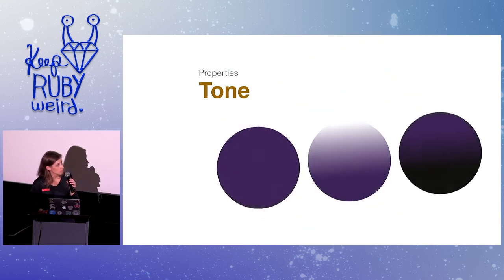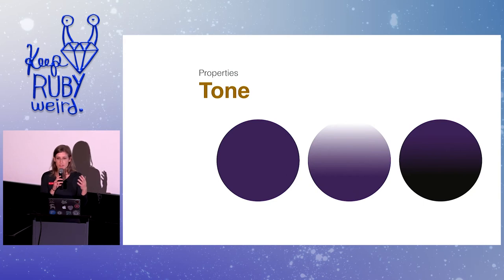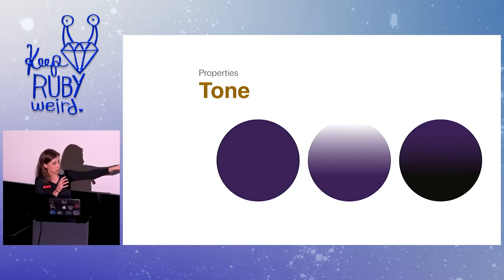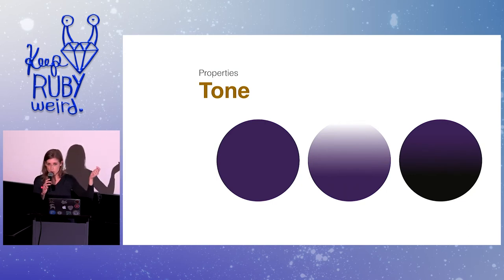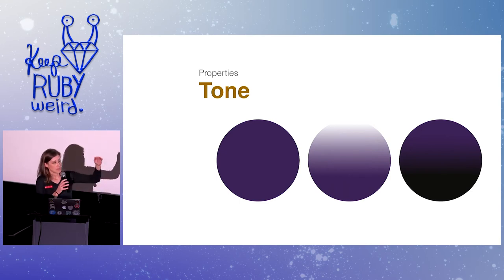Then we have tone. Tones are essentially made by mixing pure colors or hues with a neutral or grayscale color, so a tone is often softer than the original color. Tints and shades are considered tones. A tint is blending that tone with white, and a shade is blending a tone with black — so you can skew to the dark side of your color.